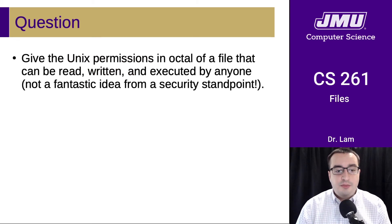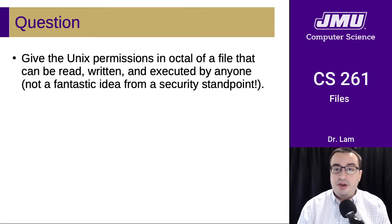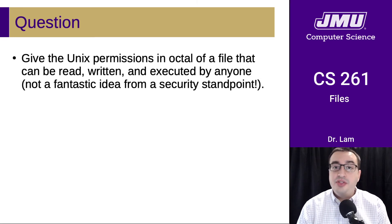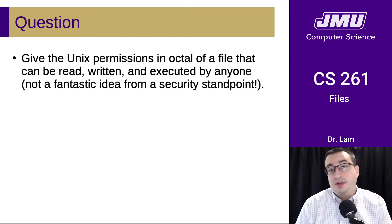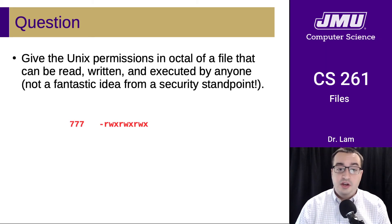Here's a question: give the Unix permissions in octal of a file that can be read, written, and executed by anyone. From a security standpoint that's not a great idea, but let's think about what the three octal digits would be. If you have read, write, and execute permission, all three bits are set in each group. The binary is 111, which is 7 in octal. So the answer is 777, because all bits are set in all three groups of permission bits.